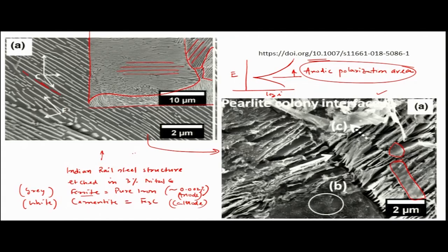This dealloying effect is a result of galvanic corrosion. What we are getting as a result of this dealloying is a consequence of the galvanic effect.